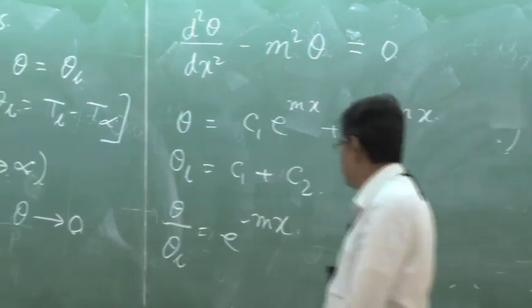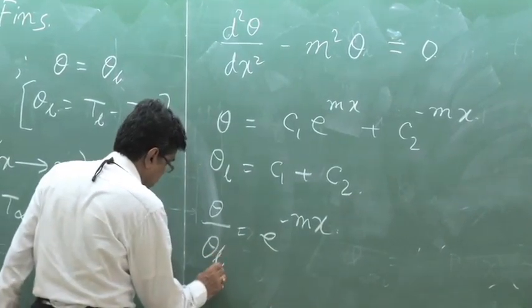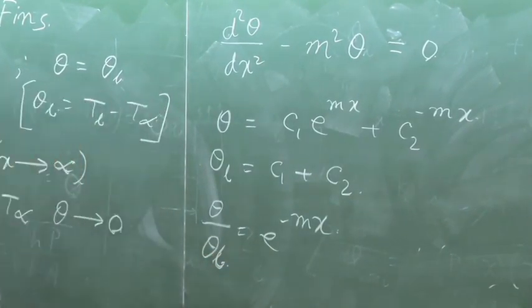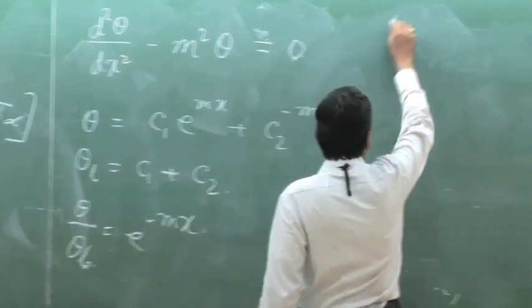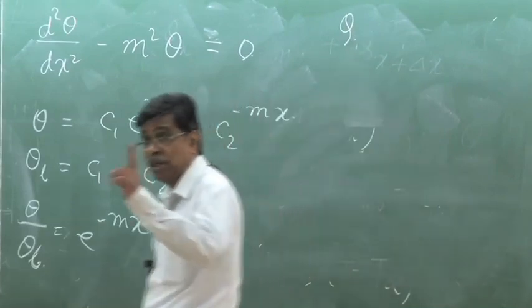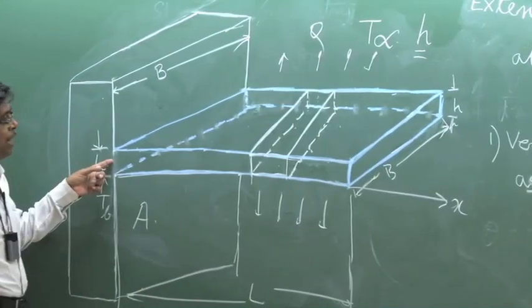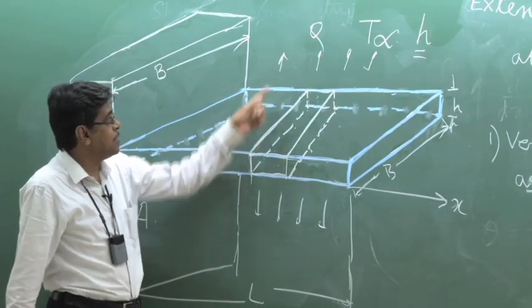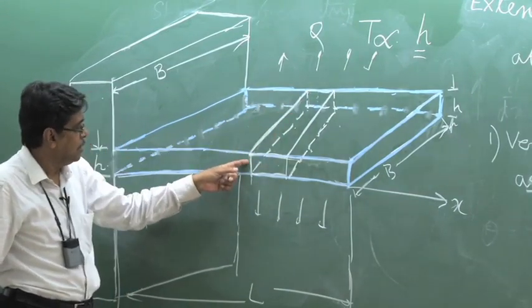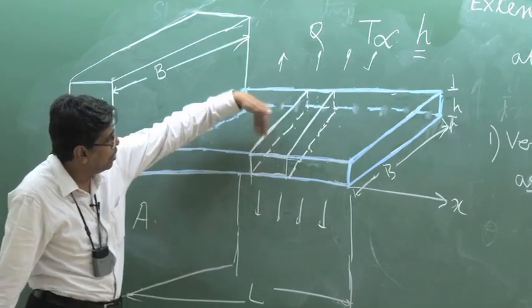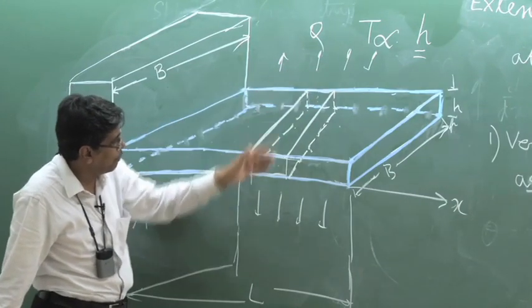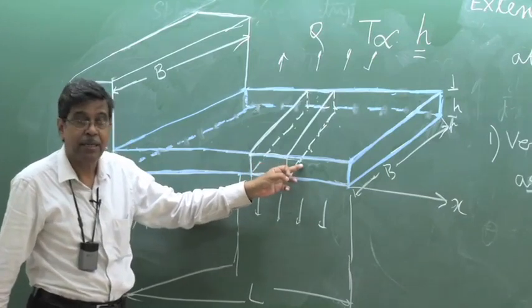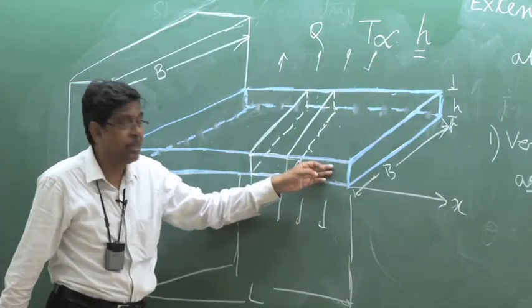So theta by theta_b is e to the power minus mx, and at x tending to infinity, theta tends to 0. Now what is the value of q? At every section q is changing. These surfaces transfer heat — at any section, the heat coming in is being transferred by convection from the lateral surface and the rest is conducted. That means the heat conduction through this is getting reduced.